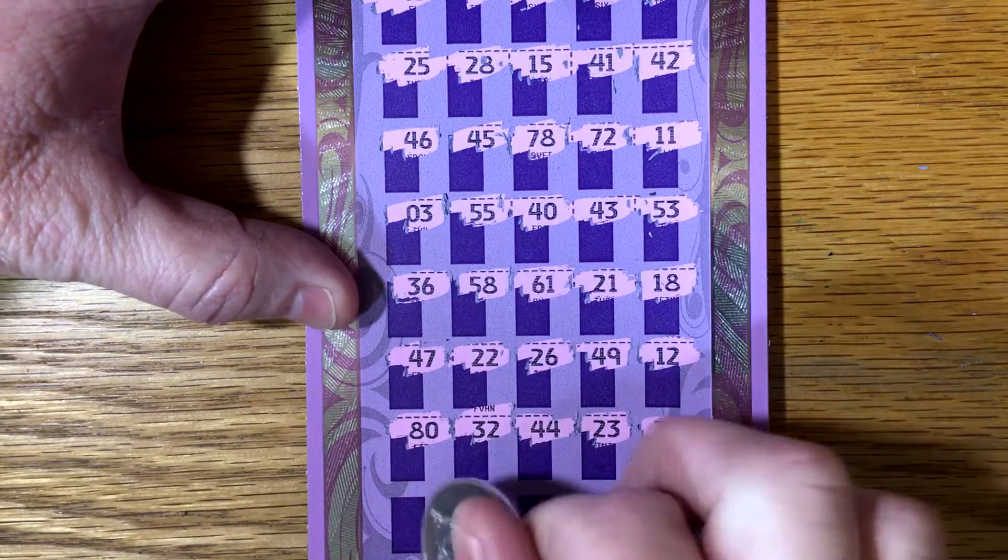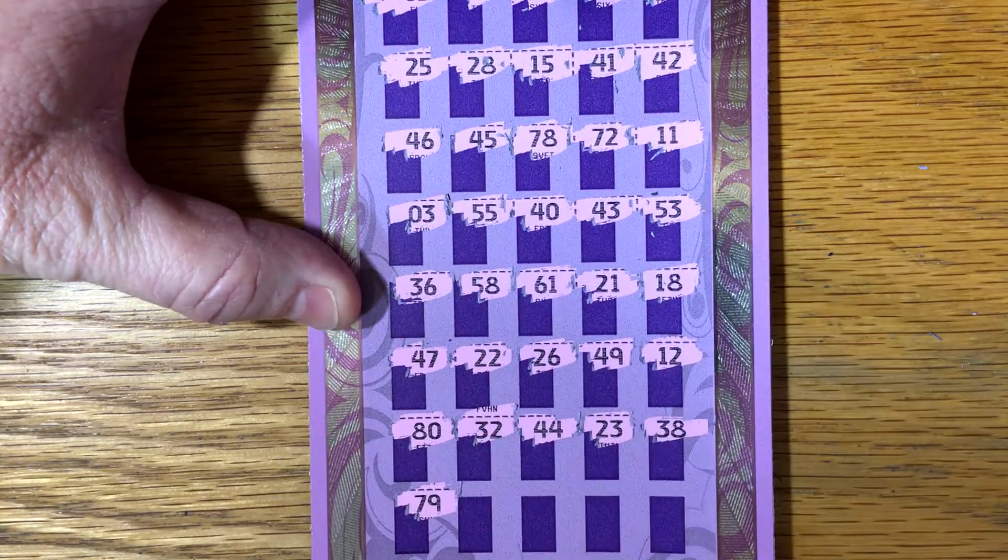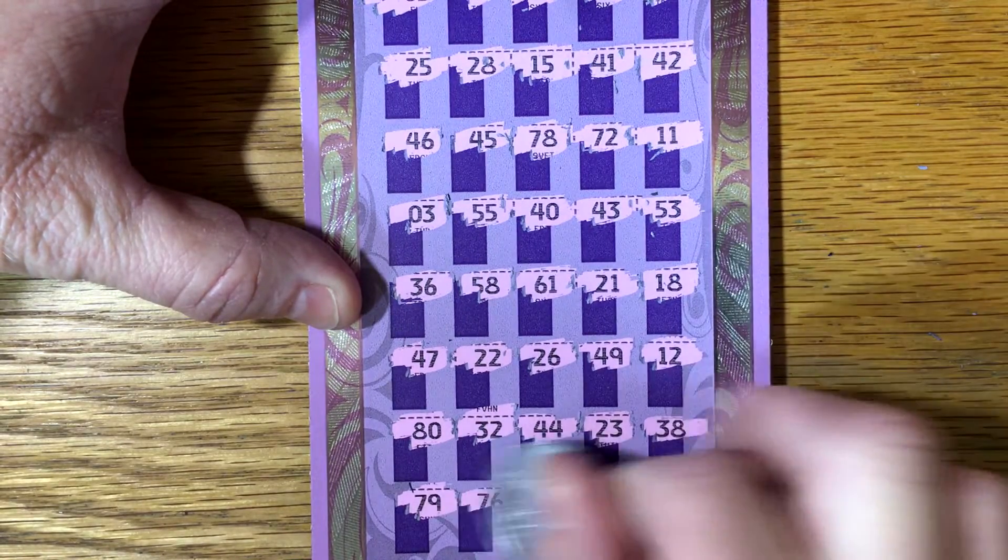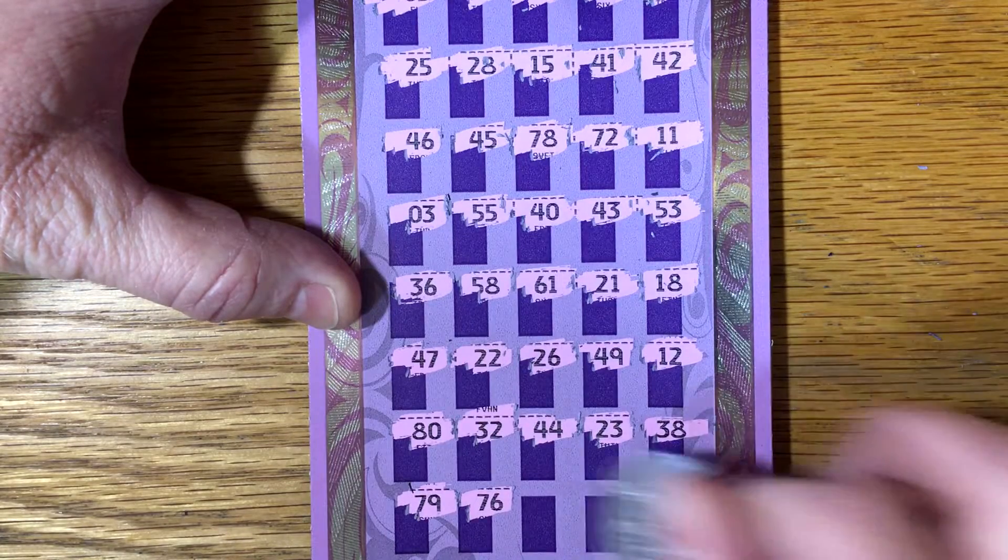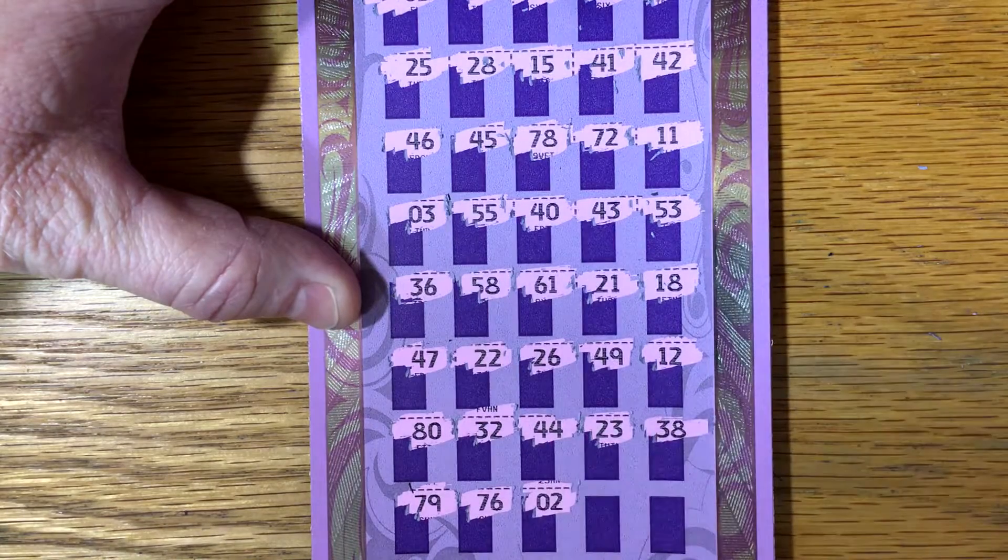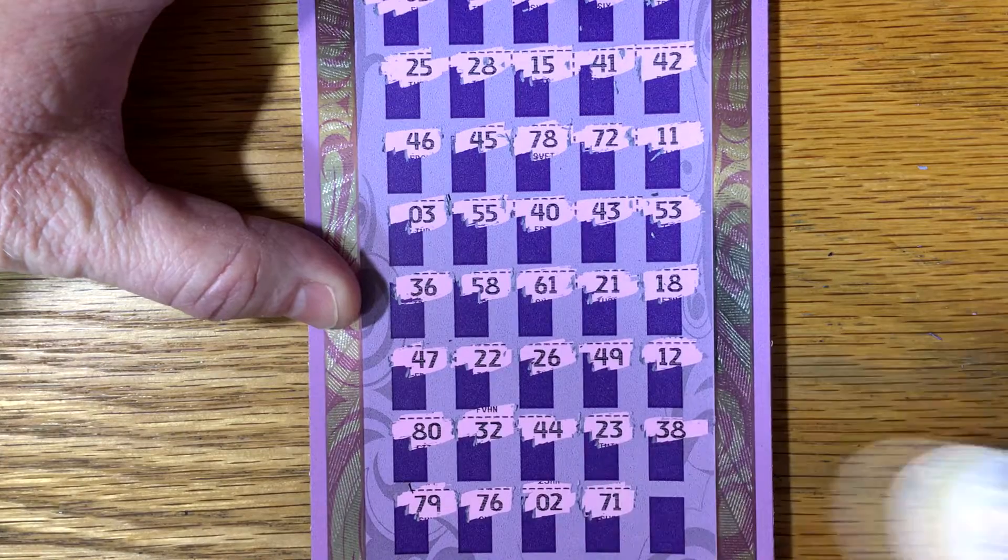I know you can't see that top row. 79, 76, 2, 71.